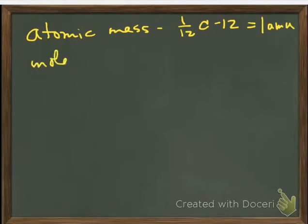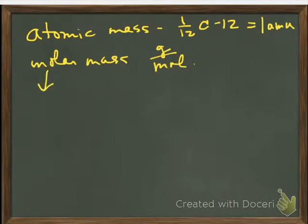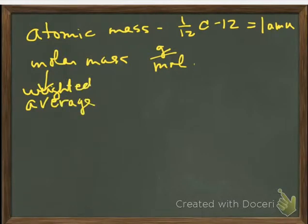And again, one AMU, atomic mass unit. When we talk about an element or element's molar mass, that is in grams per mole. Okay, this is the weighted average of all of the naturally occurring isotopes.